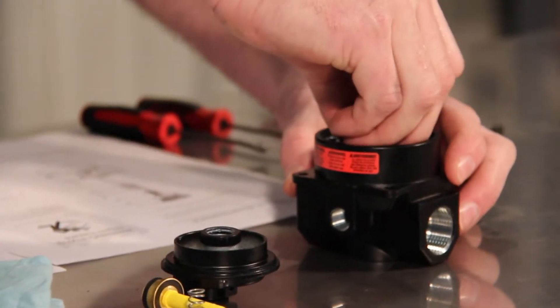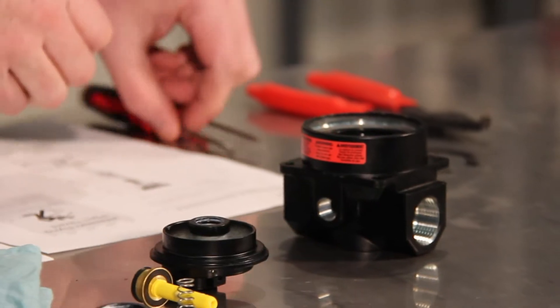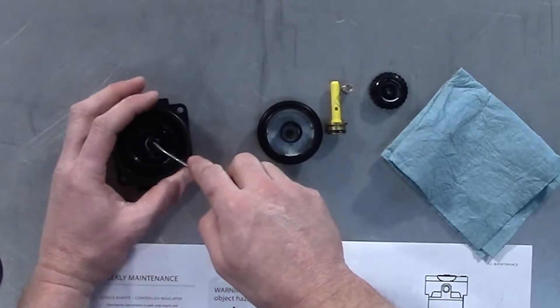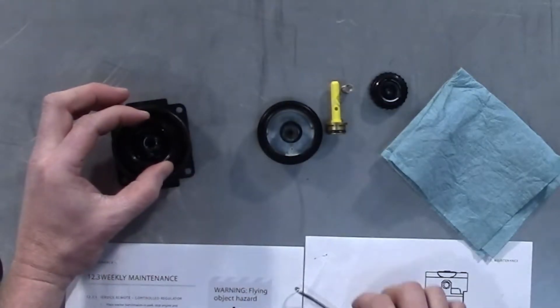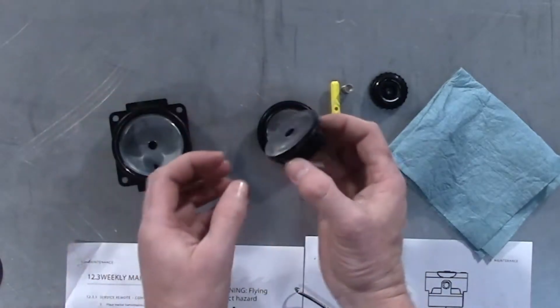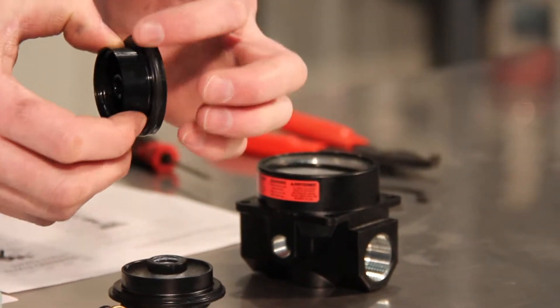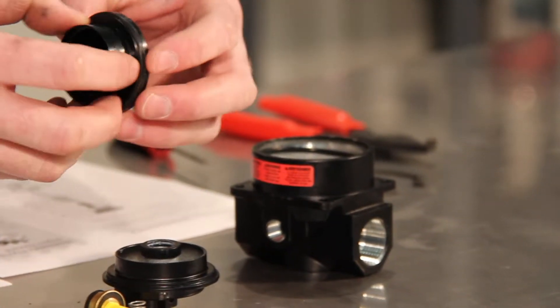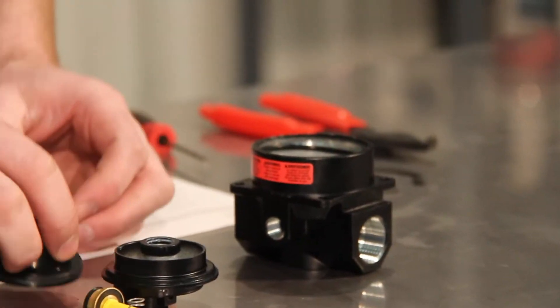Next, the bottom piston comes out. Sometimes you'll have to use a pick and there's a lip around there you can grab that out of there. And then once again, O-ring around that one. I'm going to be inspecting that, make sure it's got plenty of lubrication.